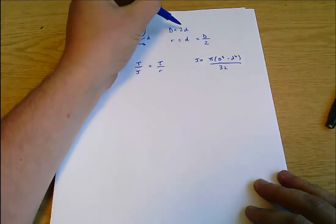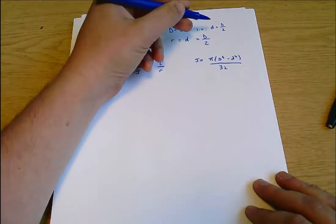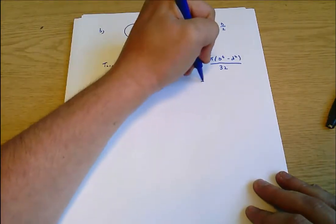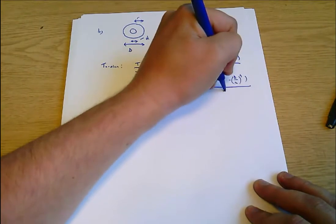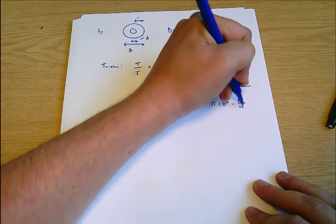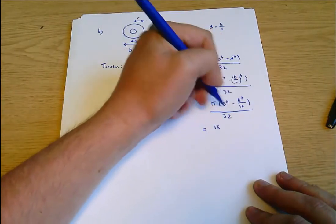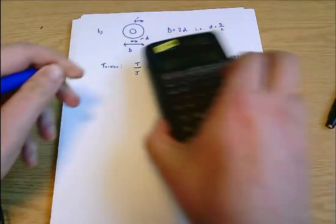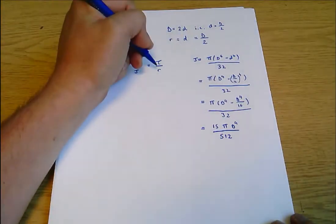So j equals π times (D to the 4 minus d to the 4) all over 32. Remember that small d is capital D over 2. If I take that to the power of 4 I'll get capital D to the 4 over 16. Going through that step by step: d to the 4 minus (d over 2) to the 4 all over 32, which equals π times (D to the 4 minus D to the 4 over 16) all over 32, which gives me 15/16ths here. So 15π D to the 4 divided by 16 times 32 which is 512. So that's our new j.